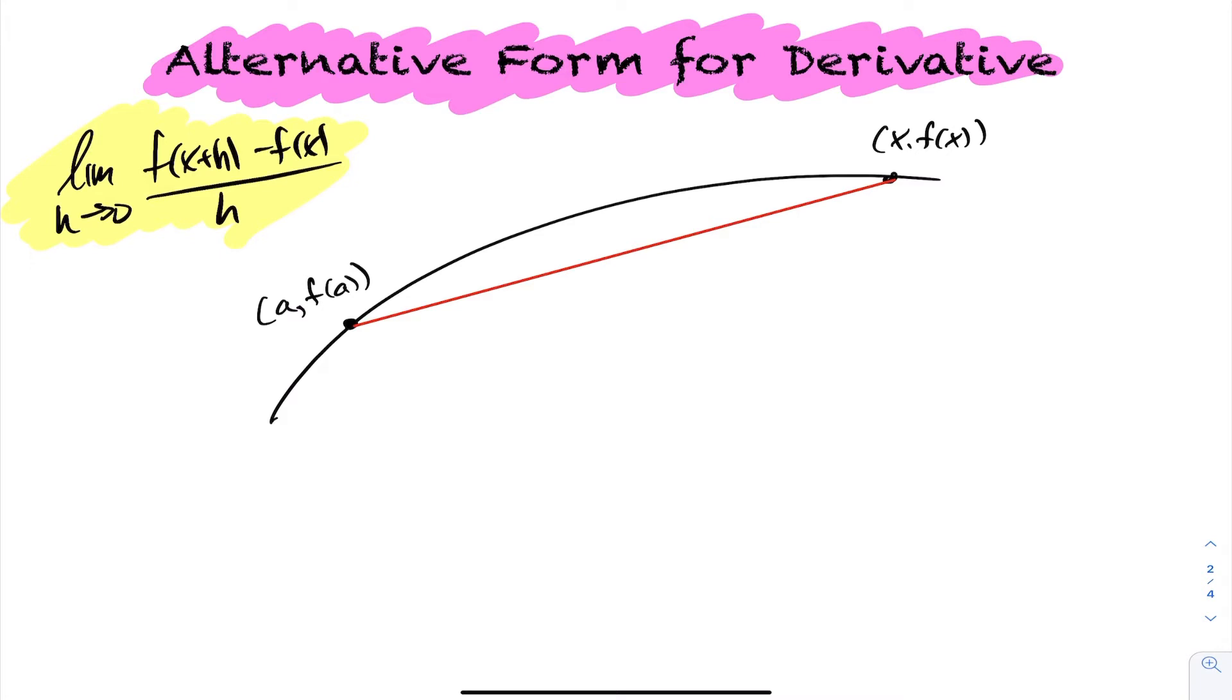Same idea though. We're looking to calculate the slope of the tangent line right at this value—the instantaneous rate of change at this point. The same process applies: we first calculate the slope of the secant line, then slowly progress closer and closer.